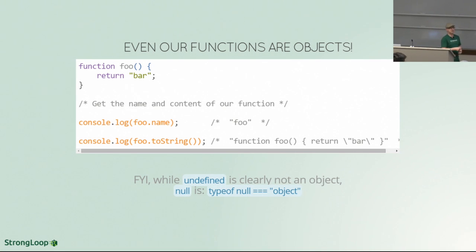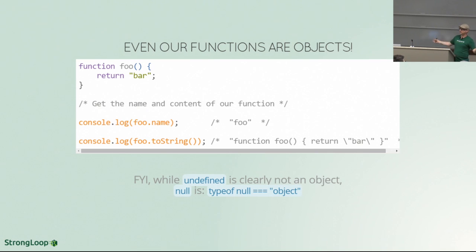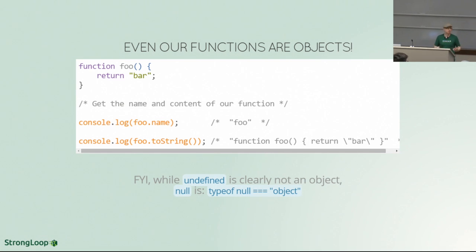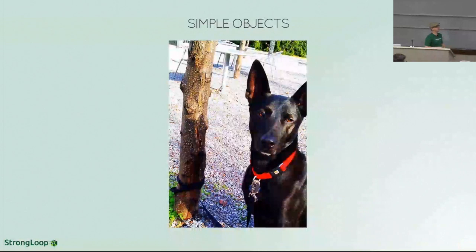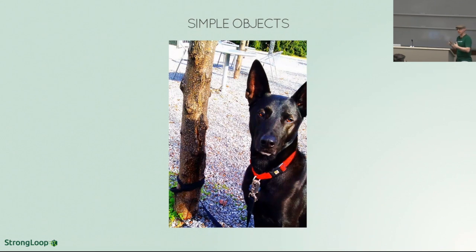Undefined is really the only thing that cannot be acted on as an object. While you technically can't get any properties or methods off of null, if you do typeof null, what do you get? Object. So undefined is the one thing that's really not. We're going to talk about objects today using this simple object — my dog Vincent — in all of our examples, doing the dog and animal analogy.